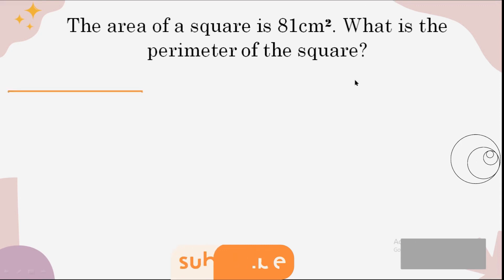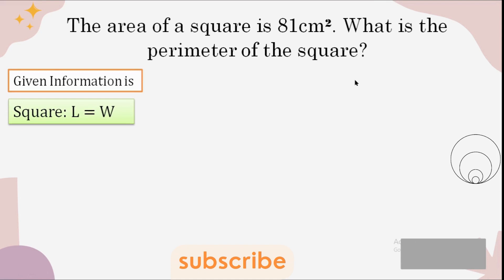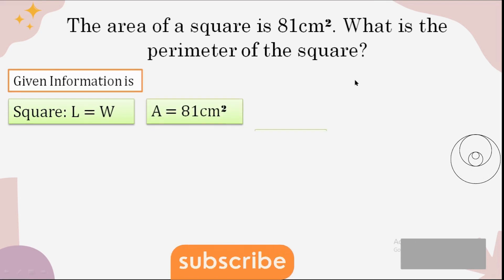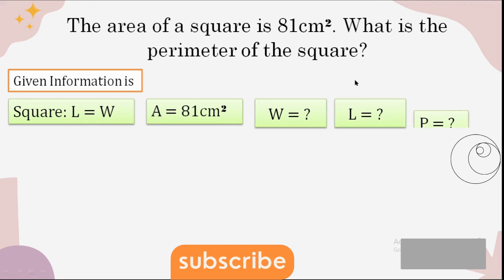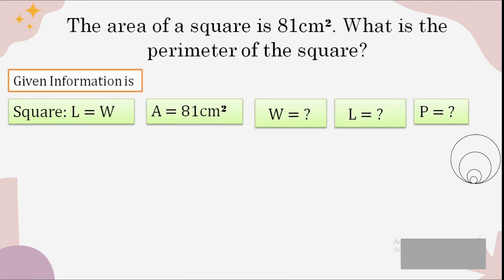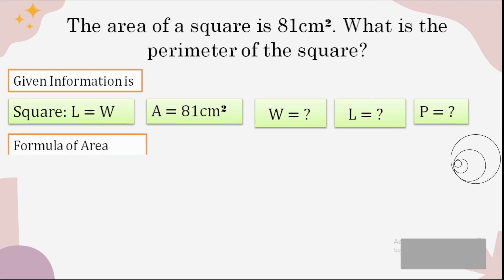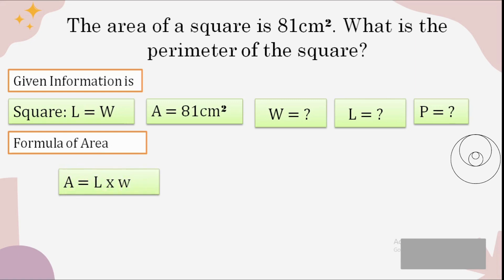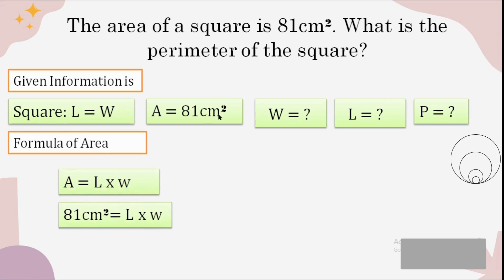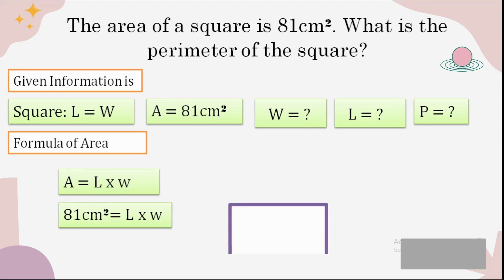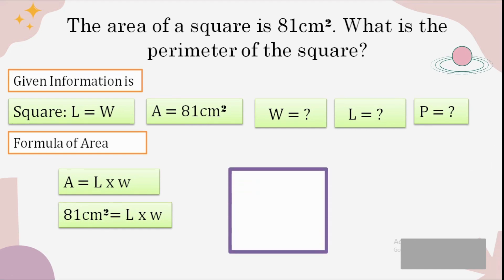The last example: the area of a square is 81 centimeters squared — what is the perimeter? Given information: it's a square so length and width are the same; area is 81 cm²; width, length, and perimeter are all to be found. Write the area formula — area equals length multiplied by width — and we have only one value to put in. We'll solve this using mental math.